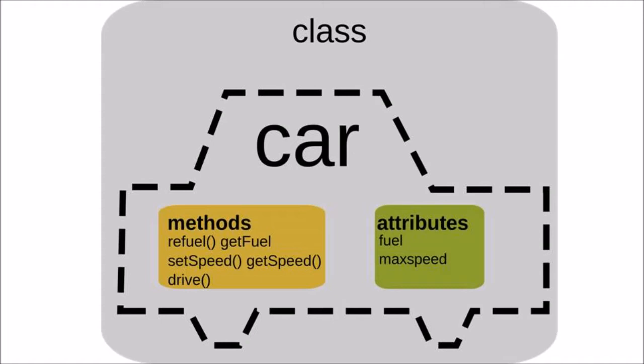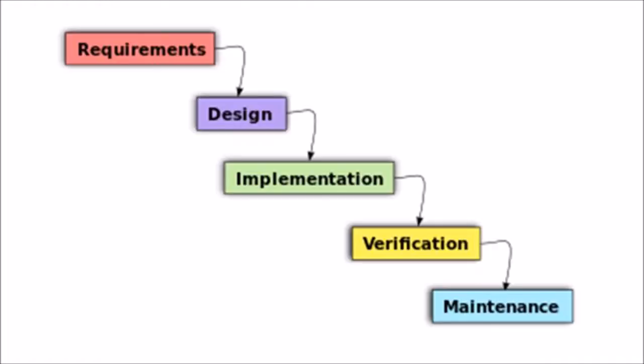Object orientation yields important benefits to the practices of software construction. Each object has attributes known as data and methods known as functions. Objects are grouped into classes. In an object-oriented system, everything is an object and each object is responsible for itself.